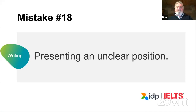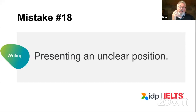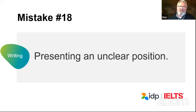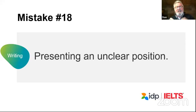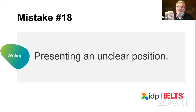Mistake number eighteen: presenting an unclear position. In task two writing, one assessment criterion is that a position is presented clearly — that means what you think. Don't say 'there are many sides to this question' without saying what you think. Use phrases like 'I think,' 'I believe,' 'in my opinion' in your task two essay, because that is what the examiner is looking for.